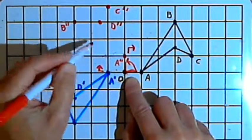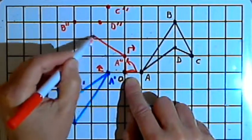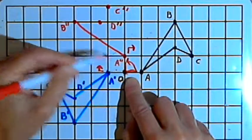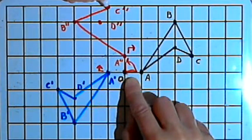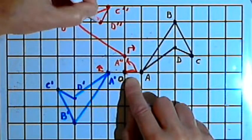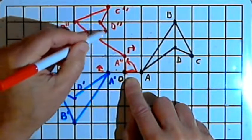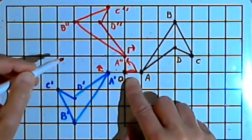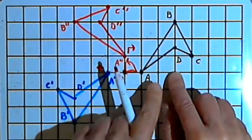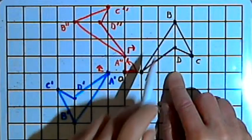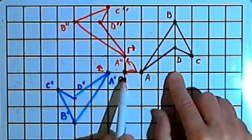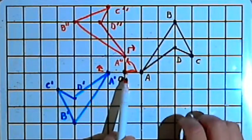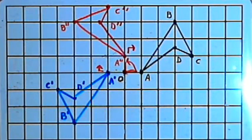Let's connect these points and make sure that this works — A double prime to B double prime, B double prime to C double prime, C double prime to D double prime, and D double prime to A double prime. And there I've got my original quadrilateral ABCD rotated 90 degrees counterclockwise around point O, the center of rotation. I hope this helps. Take care, I'll see you next time.